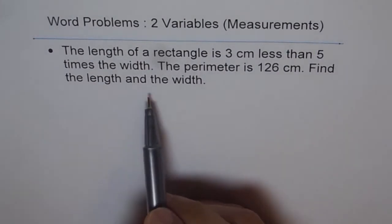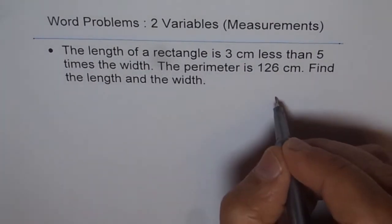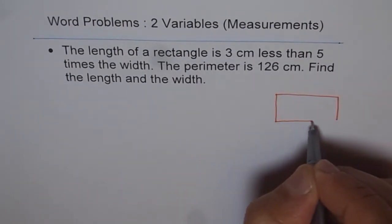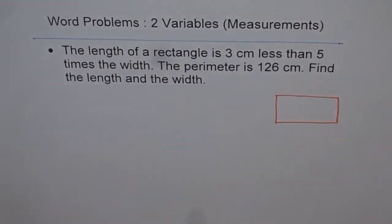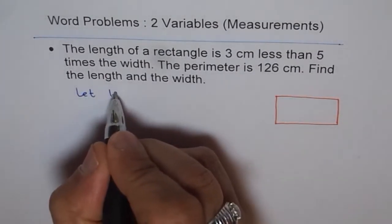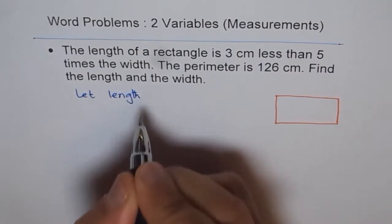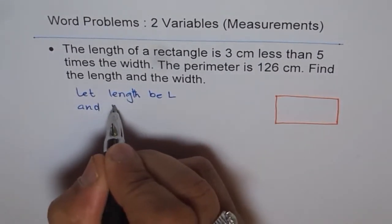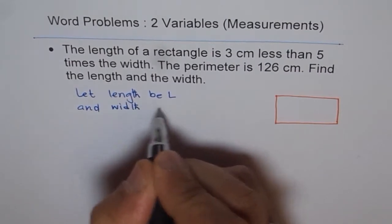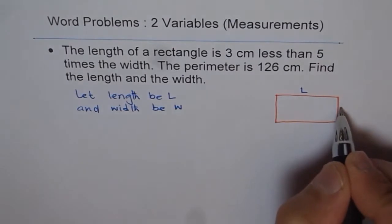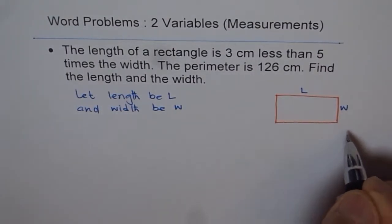Find the length and the width. So let's sketch one rectangle first and define variables. Let's say this is the rectangle and let length be L and width be W. So we've got two variables. We need two equations to solve this.